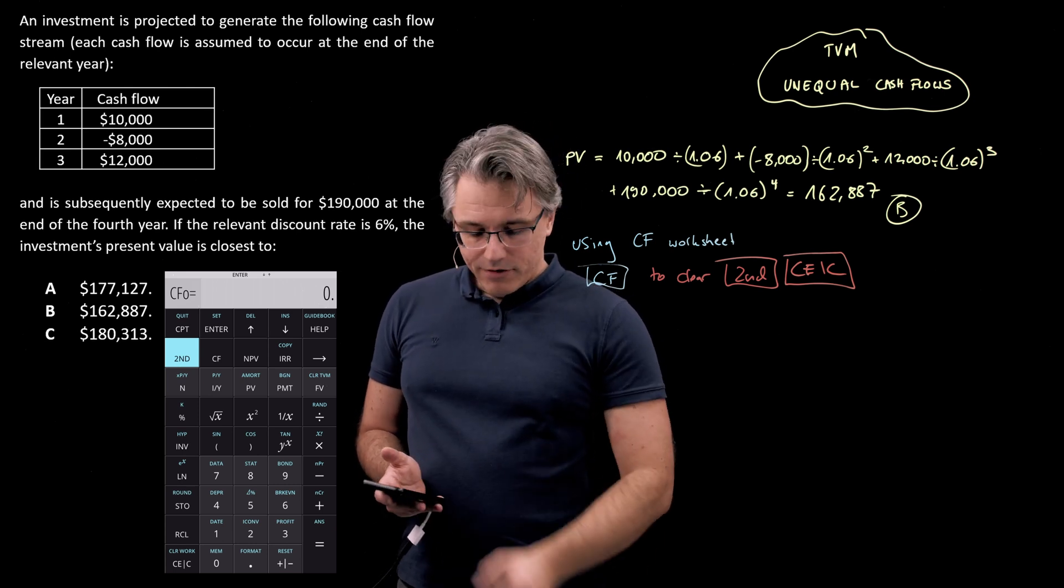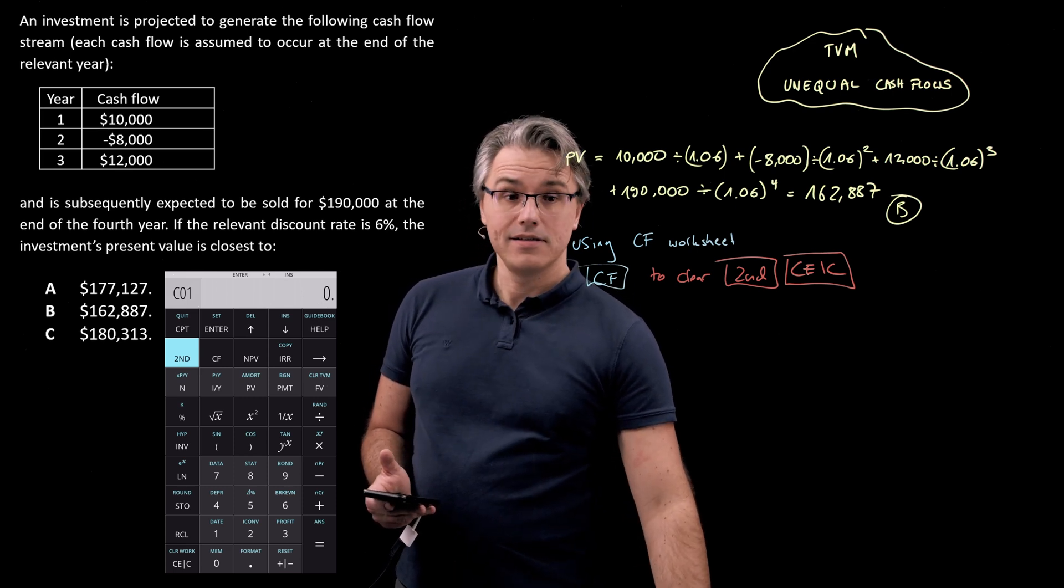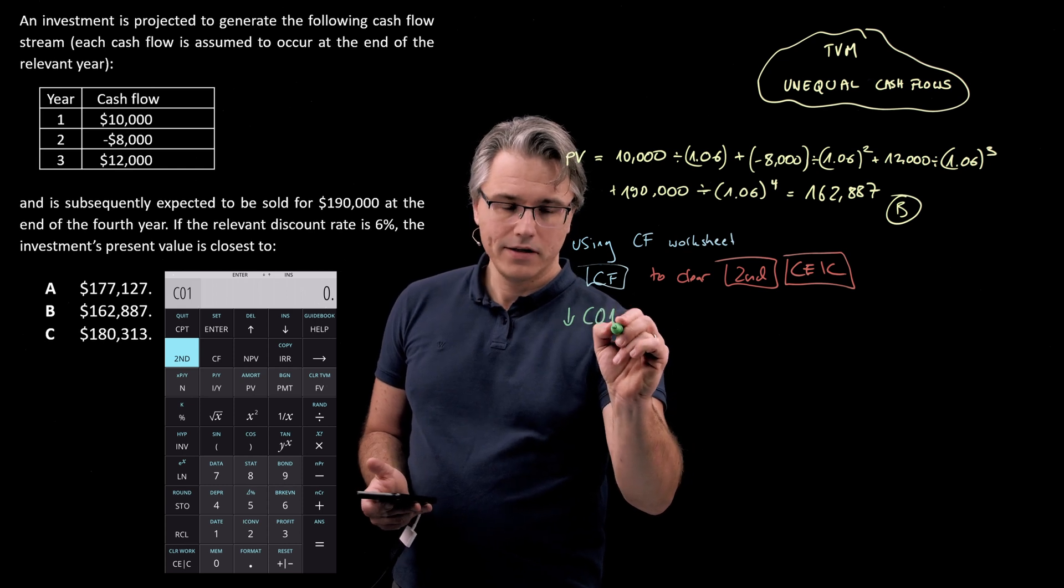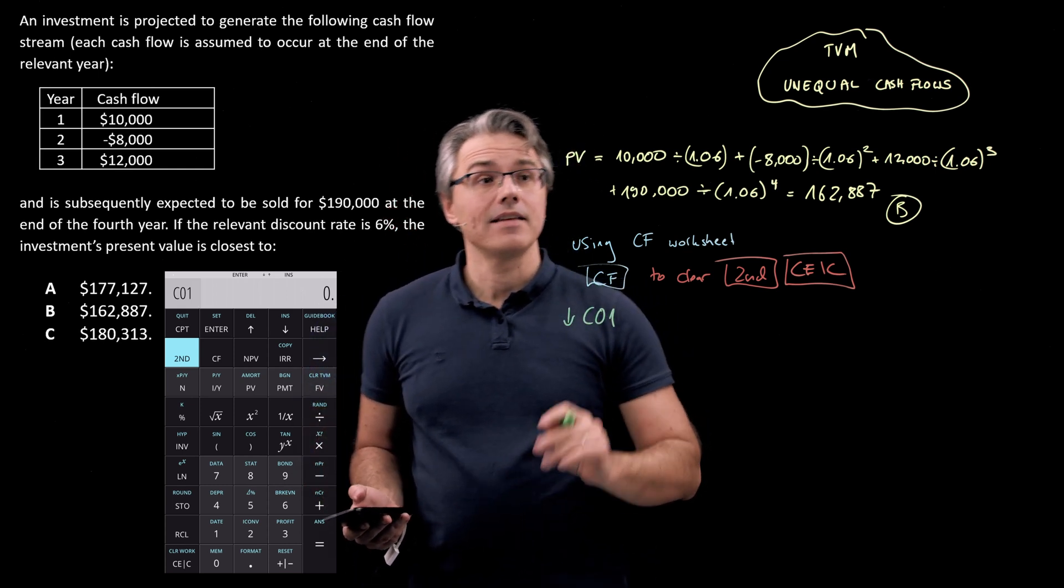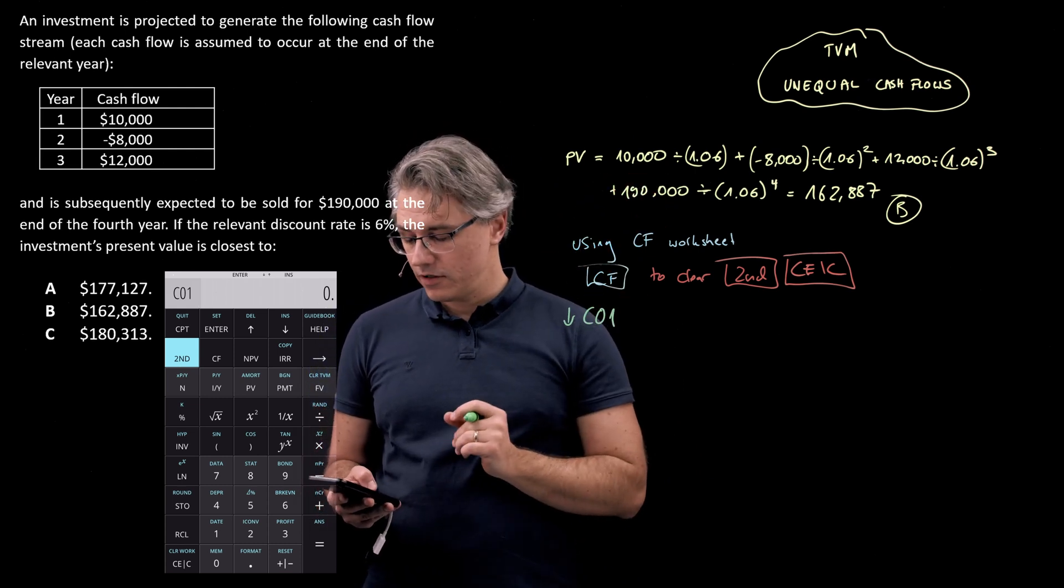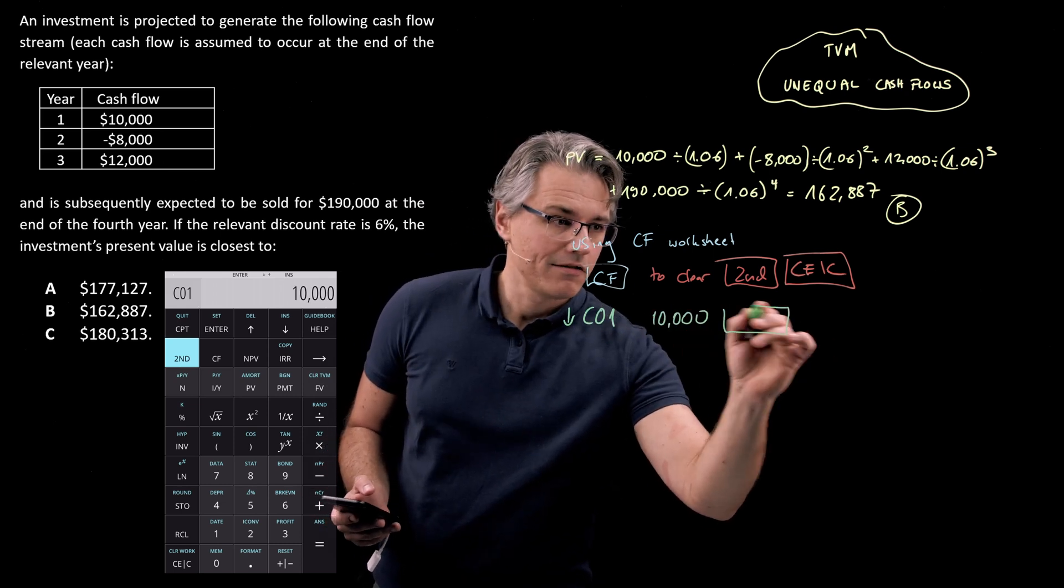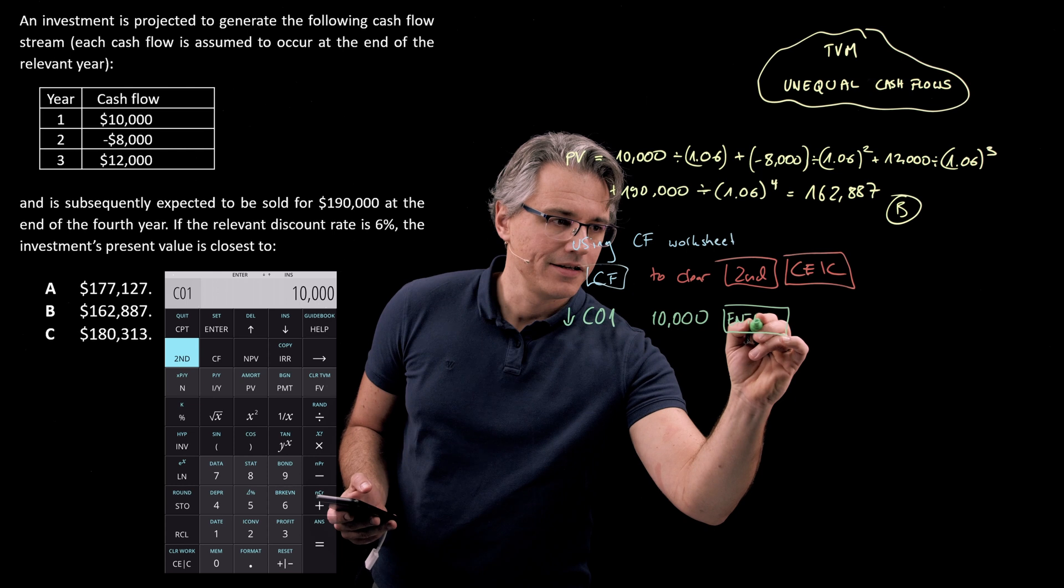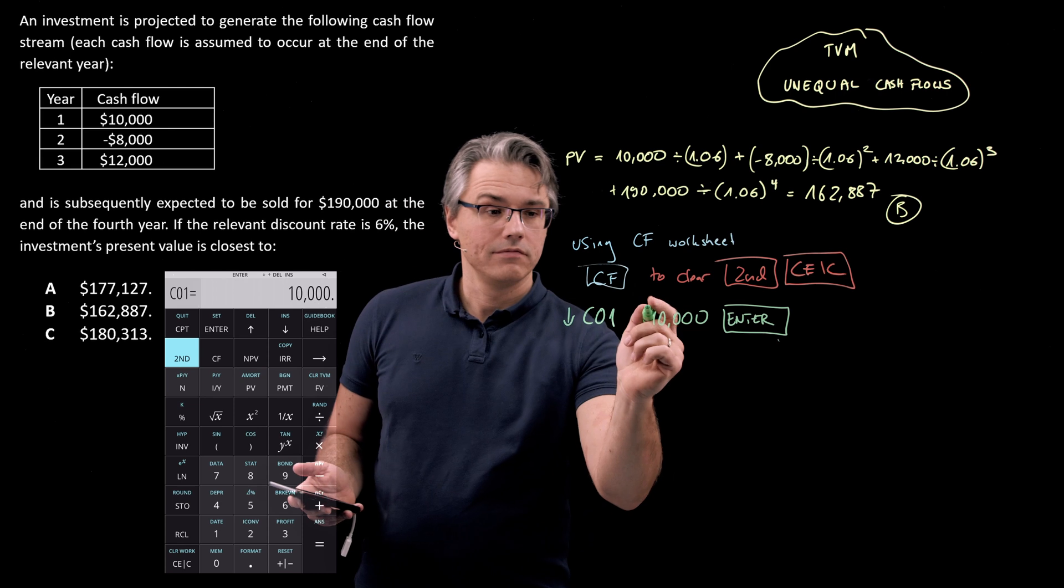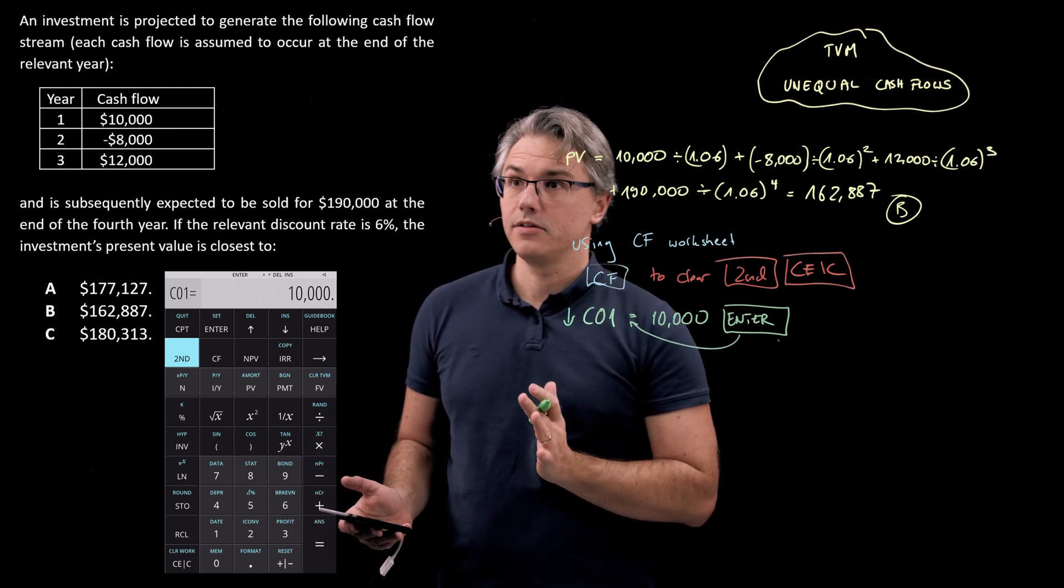Use the down arrow, pressed once, to get to something which reads C01. So that's the cash flow at time one. And now make this equal to 10,000, because that's our time one cash inflow. So I'm doing simply 10,000, but very critically, followed by the Enter key.